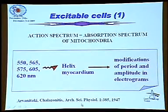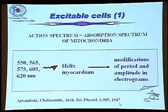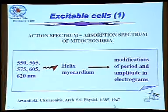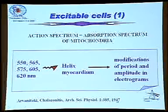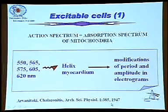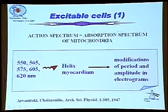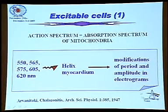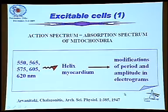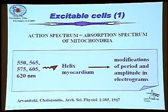This is one of my favorite works. It was done in Southern France in 1947, where researchers irradiated the edible snail Helix myocardium with different wavelengths of light and obtained modification of period and amplitude in electrograms. It was performed at a very high level, especially considering when it was done.